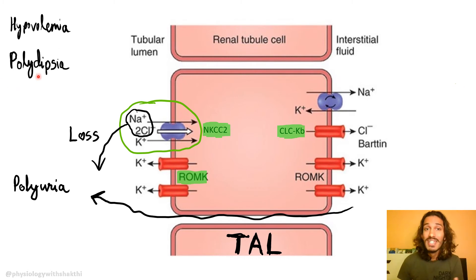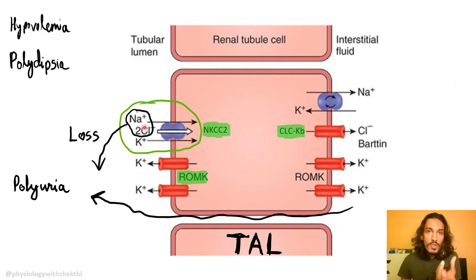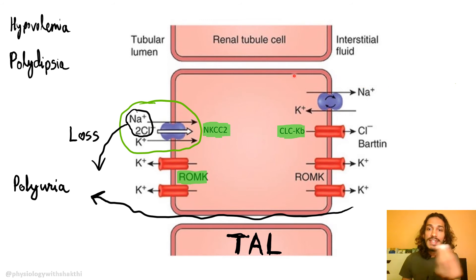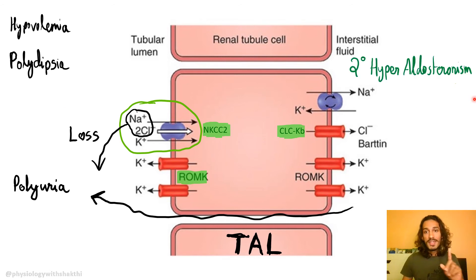If polyuria is not corrected it results in hypovolemia. A compensatory mechanism is increased thirst, so polydipsia will be present. With hypovolemia and loss of sodium chloride, the renin-angiotensin mechanism is activated for long-term compensation. The juxtaglomerular cells are actually hypertrophied. Aldosterone is also increased. Aldosterone acts on the sodium-potassium ATPase to provide a gradient, but since these channels are already affected, no matter how much gradient is provided, sodium and chloride cannot come in through the dysfunctional transporter.